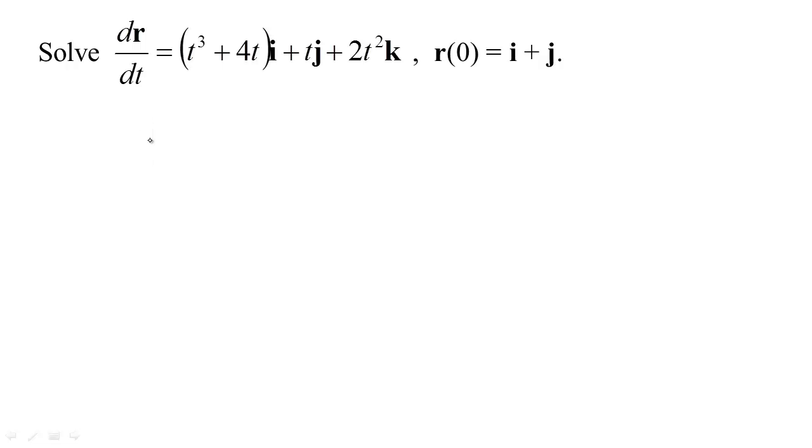Once we have the idea of taking the derivative of a vector-valued function, we can think about going the other way. What if we find an antiderivative? So what we do, if we have the derivative of position, then we could find the position just by integrating.